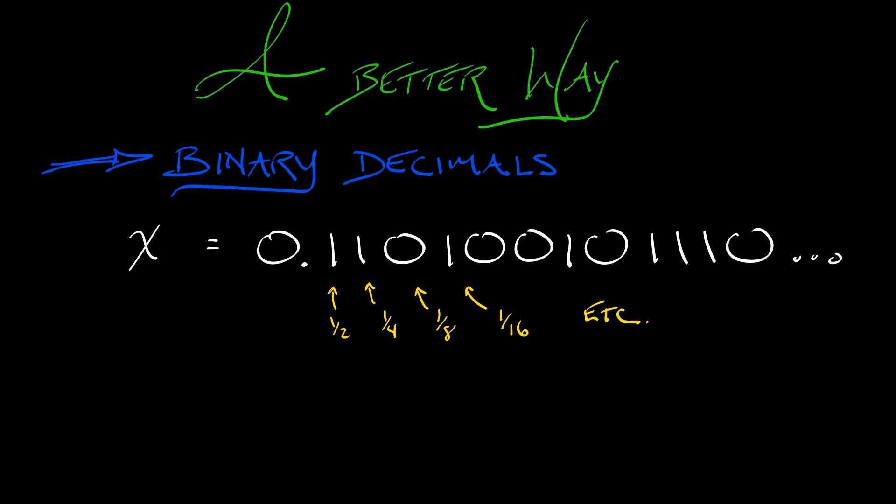Now why are we doing this? What's the point? Oh, the point is to double a binary decimal, you do the same thing as when you multiply a base 10 decimal by 10: you shift the decimal point over by 1. So p(x) in this case is going to be, well, I've got 1.10100101110, keeps going.